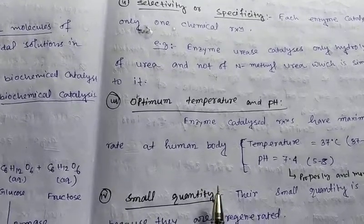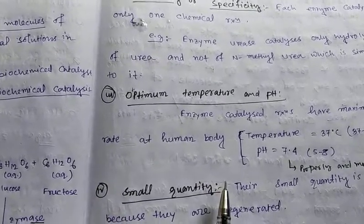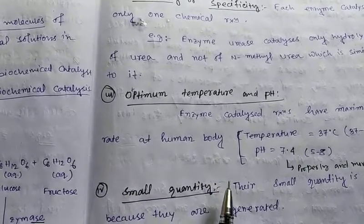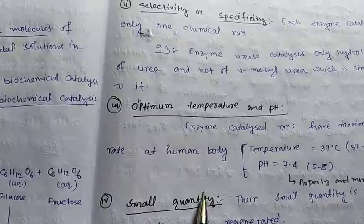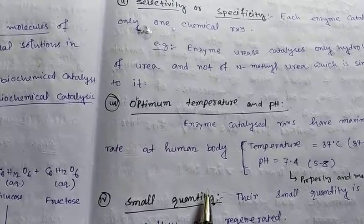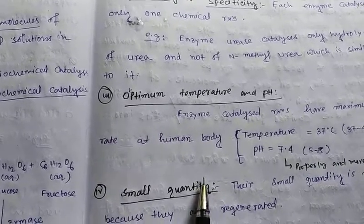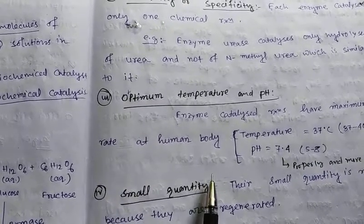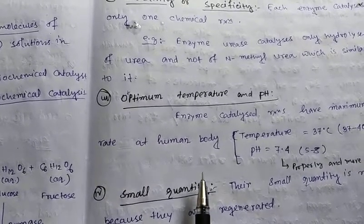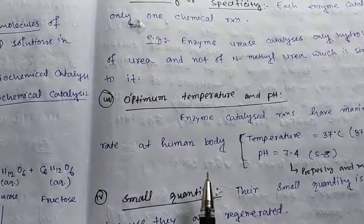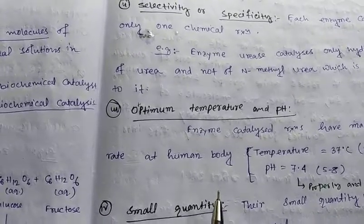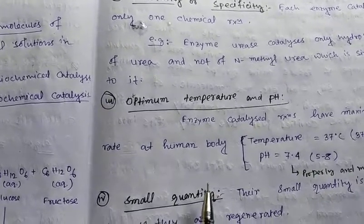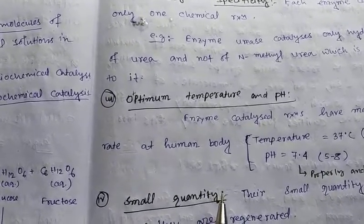This is because the enzyme is a protein. At higher temperatures, the shape of the protein molecule changes — the enzyme gets denatured.